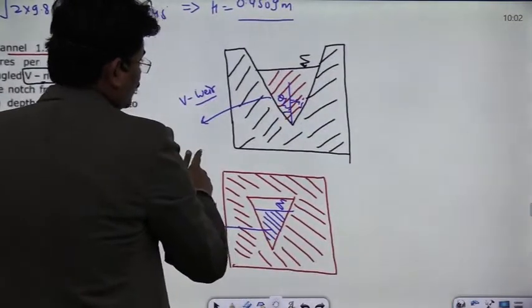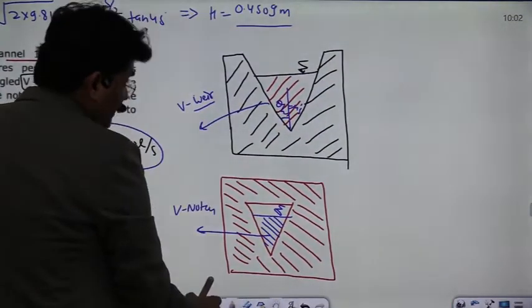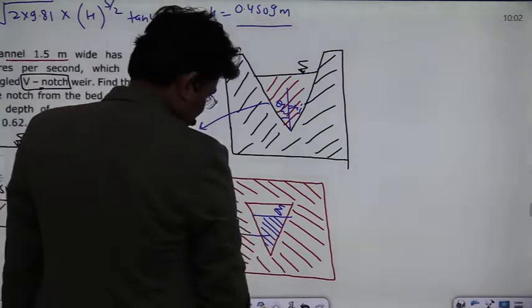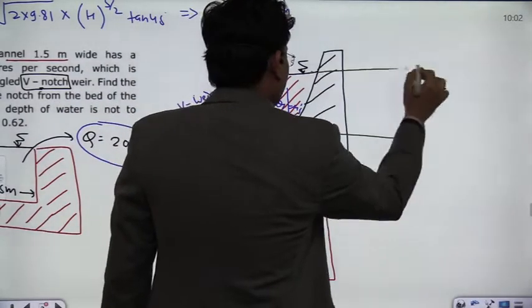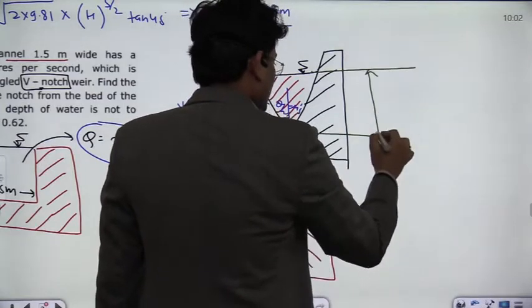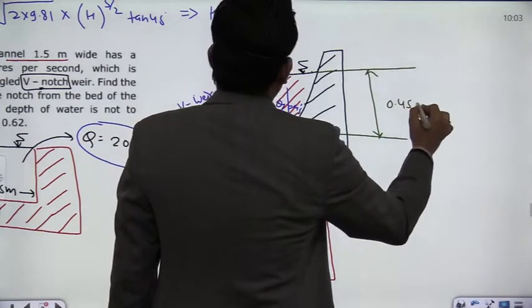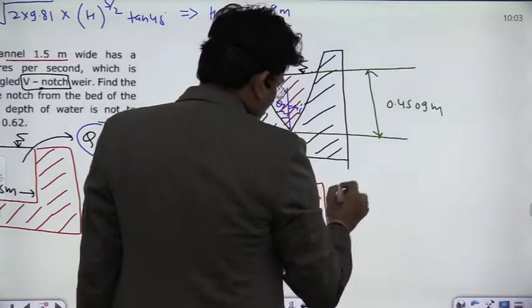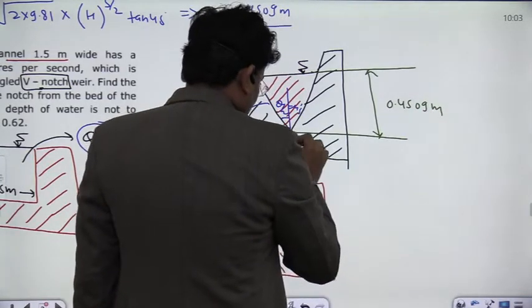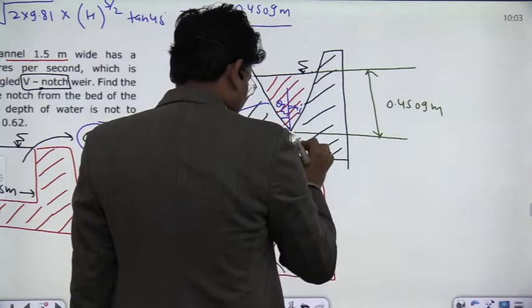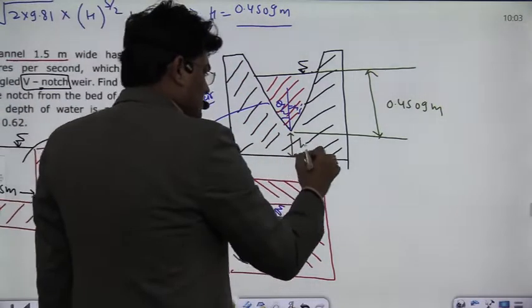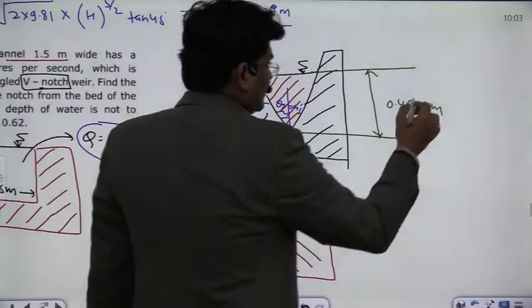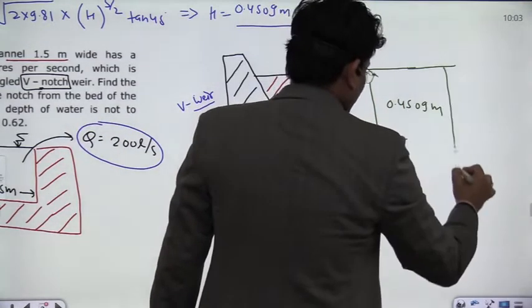So from this equation we will get the answer to the head. The head coming out to be 0.4509 meter. That is equal to 0.4509, okay. Basically this is the vertex, which is the height, and you will get the answer to the head. And in the question this is told that the top surface is greater than 1 meter.